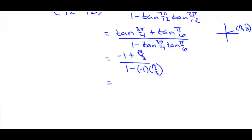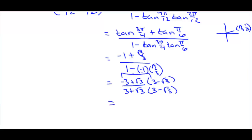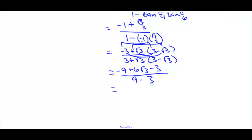Simplifying, we get negative 1 plus square root of 3 over 3, over 1 minus negative 1 times square root of 3 over 3. Clearing the complex fraction gives us negative 3 plus square root of 3 over 3 plus square root of 3. We rationalize the denominator by multiplying by 3 minus square root of 3 over 3 minus square root of 3, giving us negative 9 plus 6 square root of 3 minus 3, all over 9 minus 3, which equals negative 12 plus 6 square root of 3 over 6, which simplifies to negative 2 plus square root of 3.